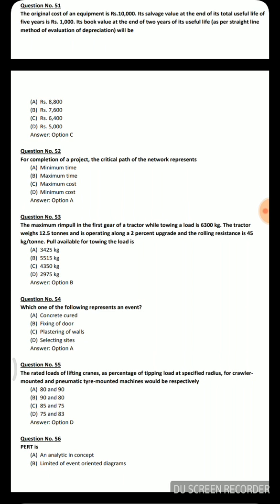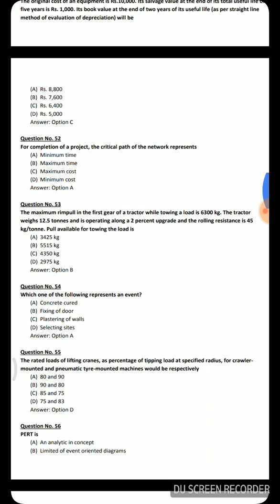Next question: for completion of a project, the critical path of the network represents — option A: minimum time, option B: maximum time, option C: maximum cost, option D: minimum cost. The correct answer is minimum time — the minimum time required to complete the project.